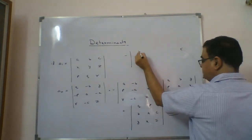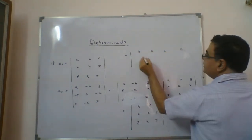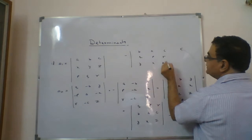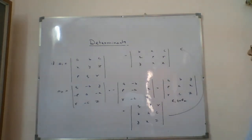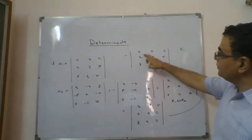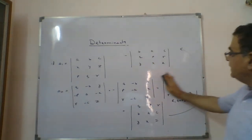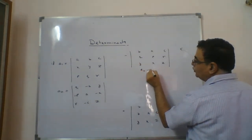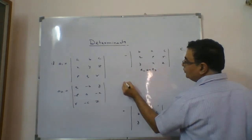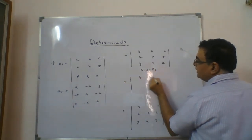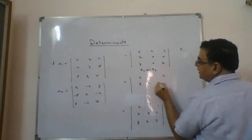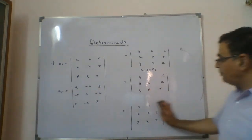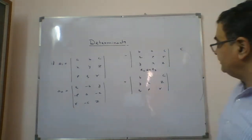After the first interchange (R1 and R2), with a minus sign in front, we get: b, a, c; then q, p, r; then y, x, z. Then we interchange R2 and R3, bringing another minus, so it becomes plus. Result: b, a, c; y, x, z; q, p, r.